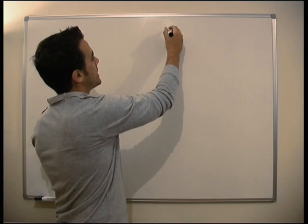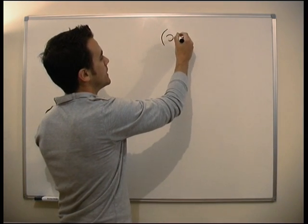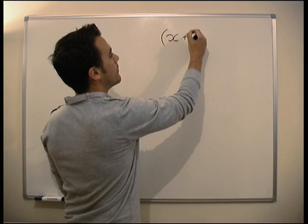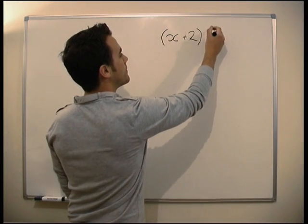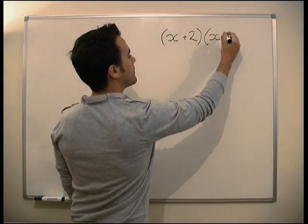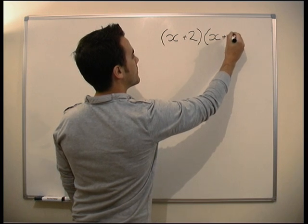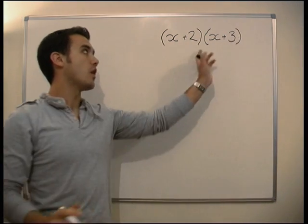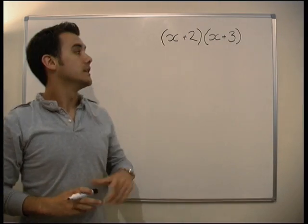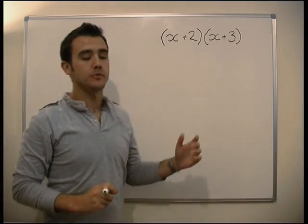So what we're going to look at is when we have this sort of thing in brackets, and you'll see why we're looking at these as we go on. How do I multiply this out?